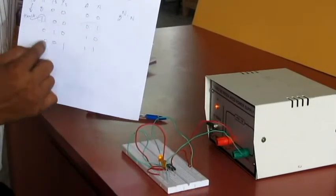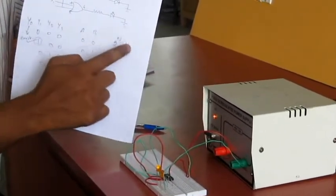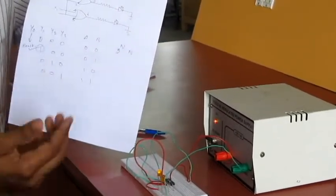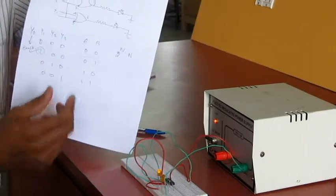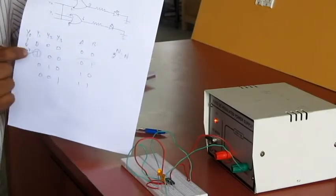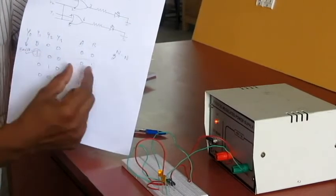So likewise we can check for all the inputs and you can extend this 2 power n to n, for example 8 to 3. Likewise you can extend the input order and you can produce such a unique code for the given input.